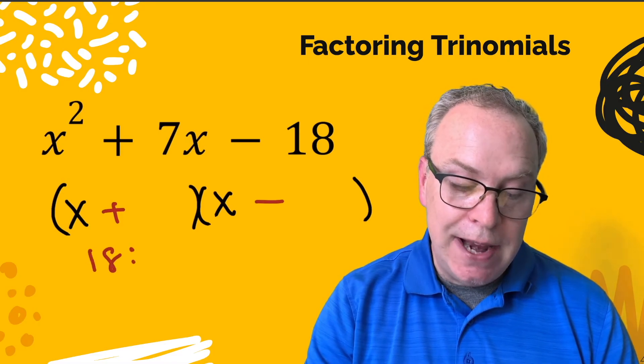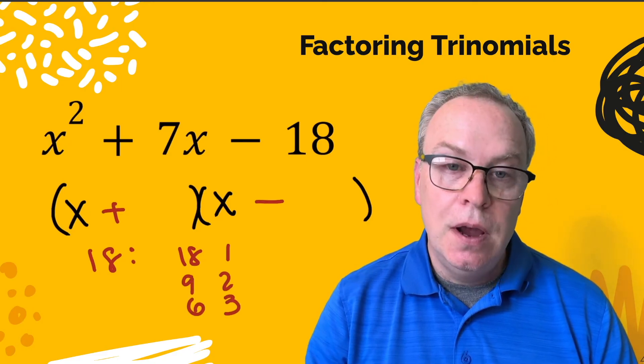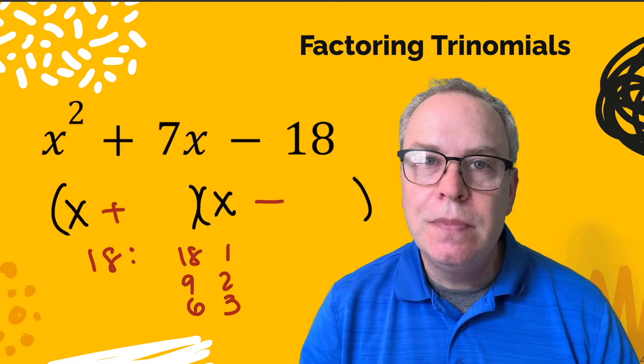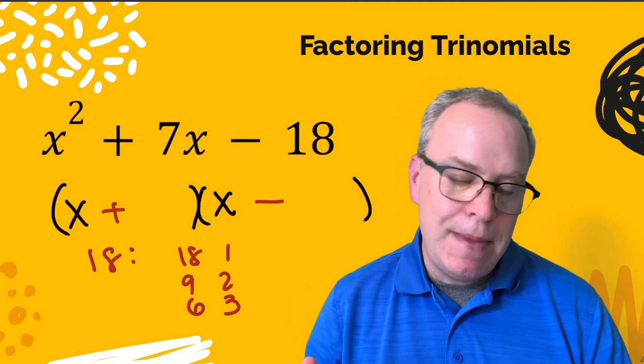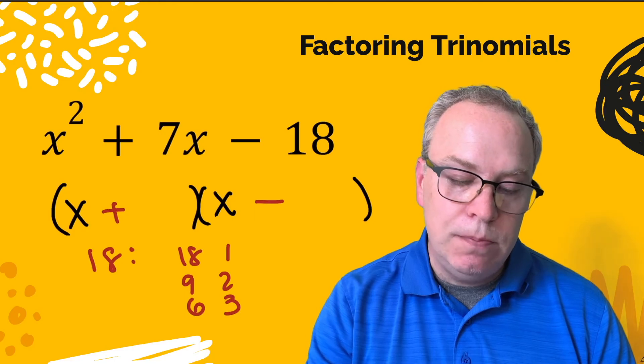Let's divide 18 up. 18 and 1, 9 and 2, 6 and 3. All right, do any of those add up to 7? No, they don't, do they? None of them add up to 7, but that's okay. Because we want our middle term to be positive.